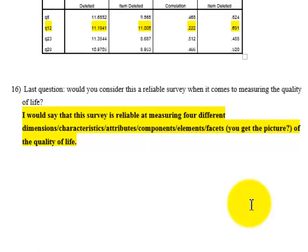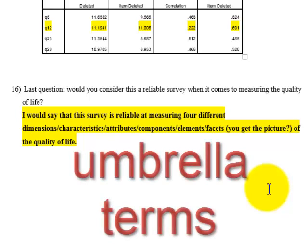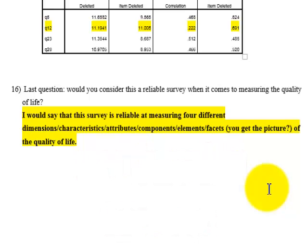So the last question is, would you consider this a reliable survey when it comes to measuring the quality of life? My answer was, the survey is reliable at measuring four different or four unique dimensions, characteristics, attributes, components, elements, facets, whatever you want to call them, of the quality of life. So I hope that helped. Have a great day.